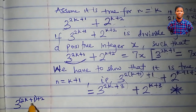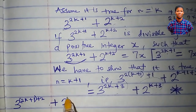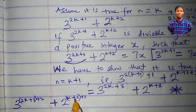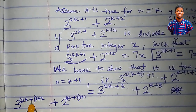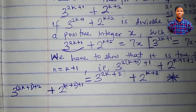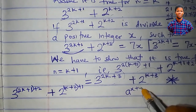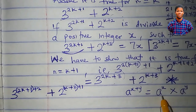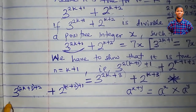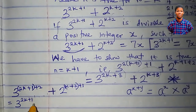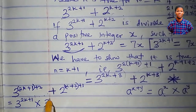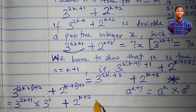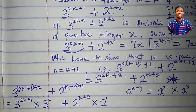We can group 3^(2k+1+2) and 2^(k+2+1). Applying the law of indices — a^(x+y) = a^x times a^y — this equals 3^(2k+1) times 3^2, plus 2^(k+2) times 2^1. Since 3^2 is 9 and 2^1 is 2, we have 9 times 3^(2k+1) plus 2 times 2^(k+2). We have already made 3^(2k+1) the subject of the formula.